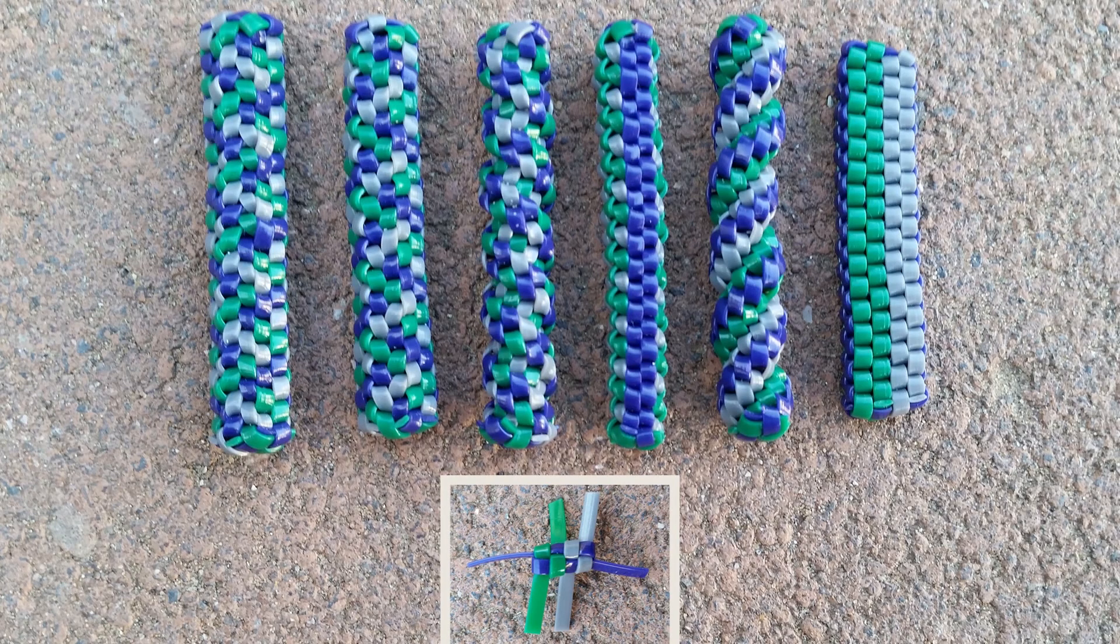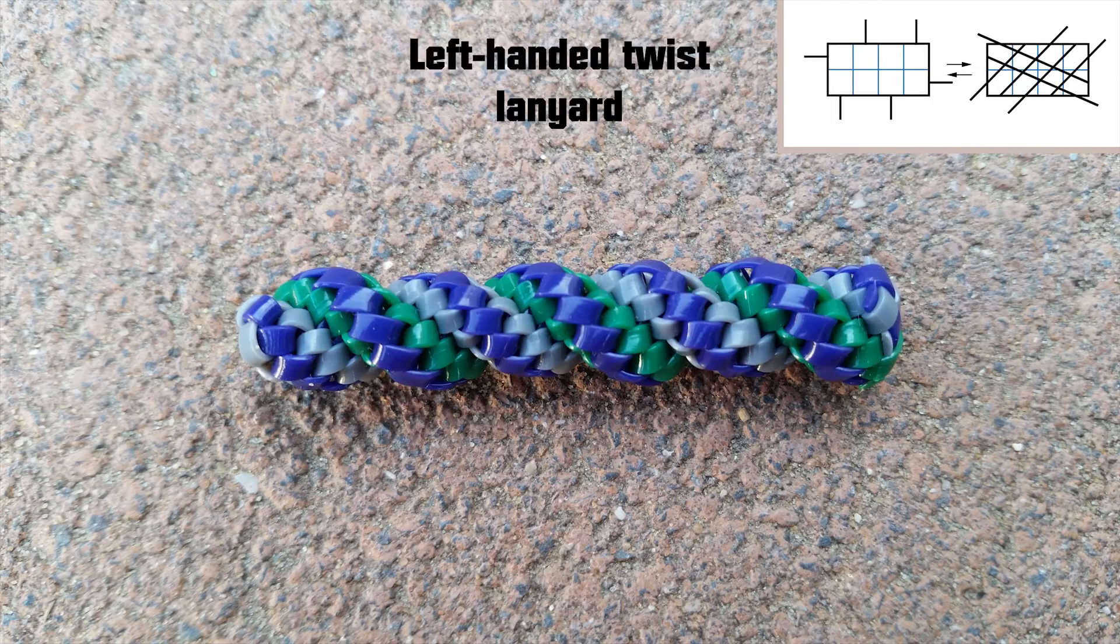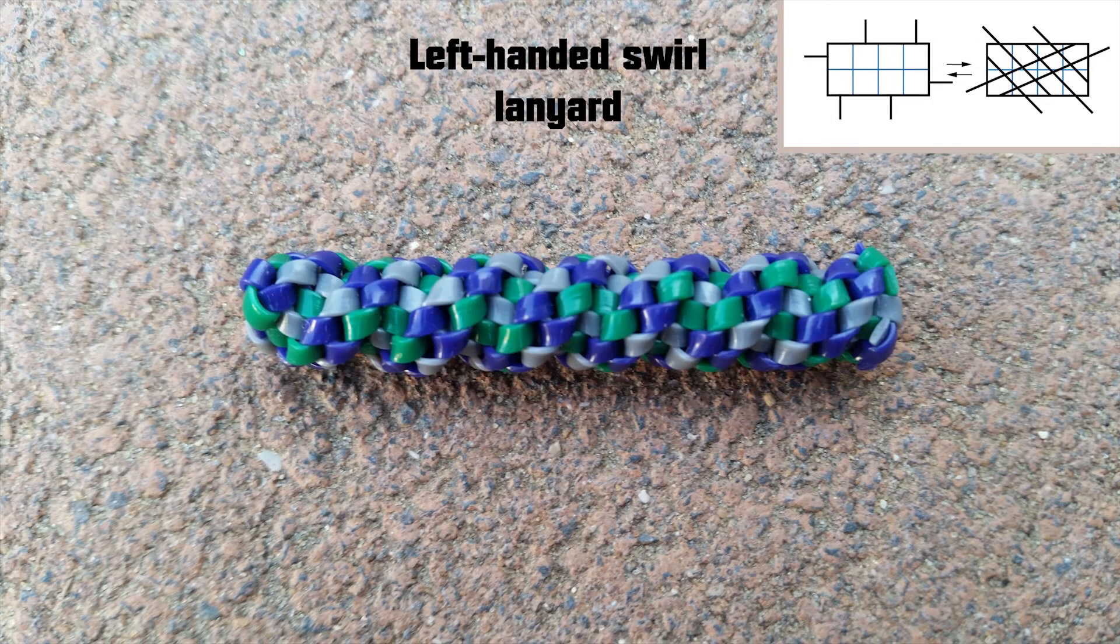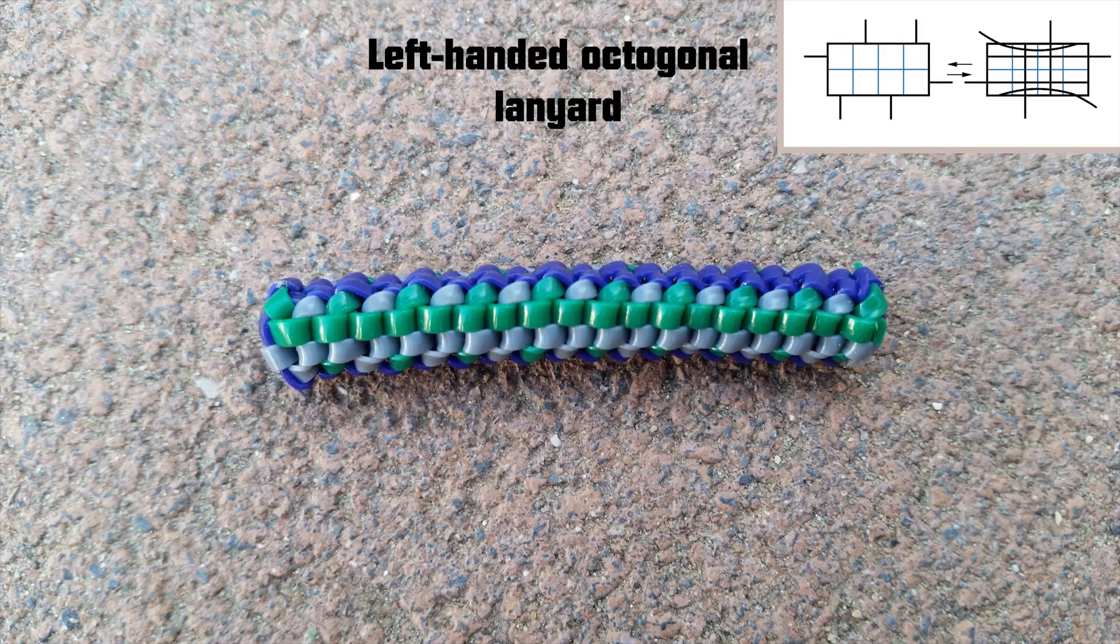Now for some lanyards. These are all six lanyards that we mentioned, which start from this particular left-hand position. Brick, twist, swirl, chevron, inverse chevron, and the octagonal.